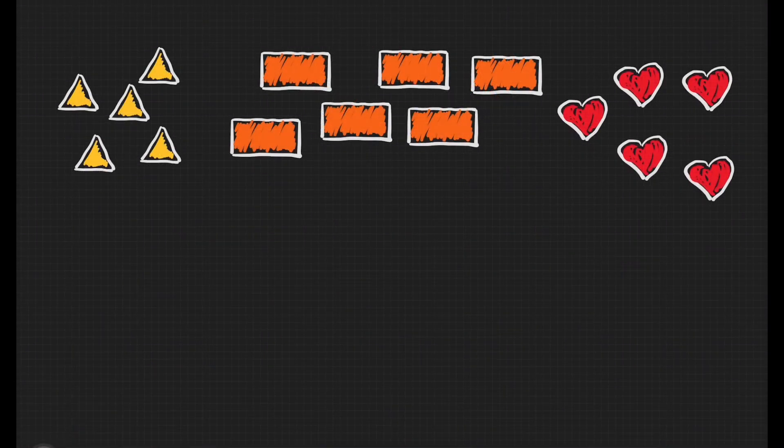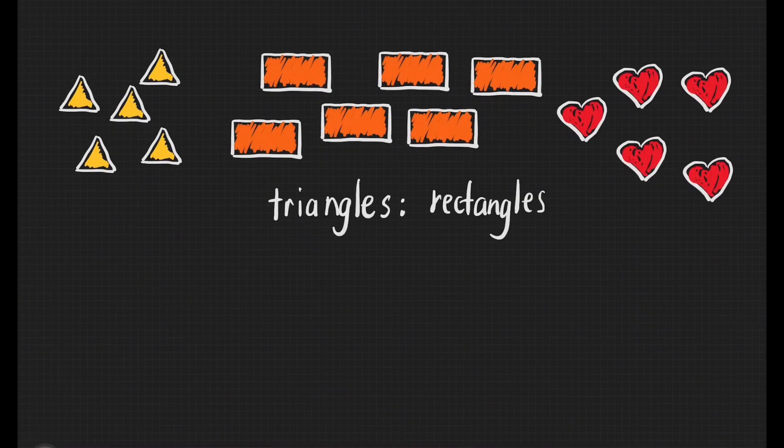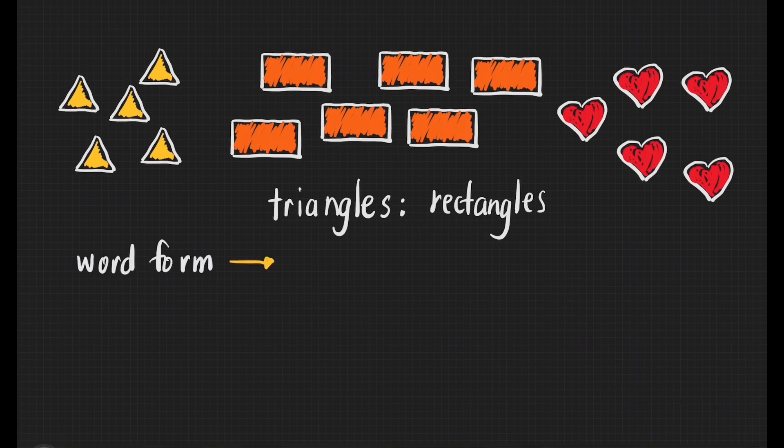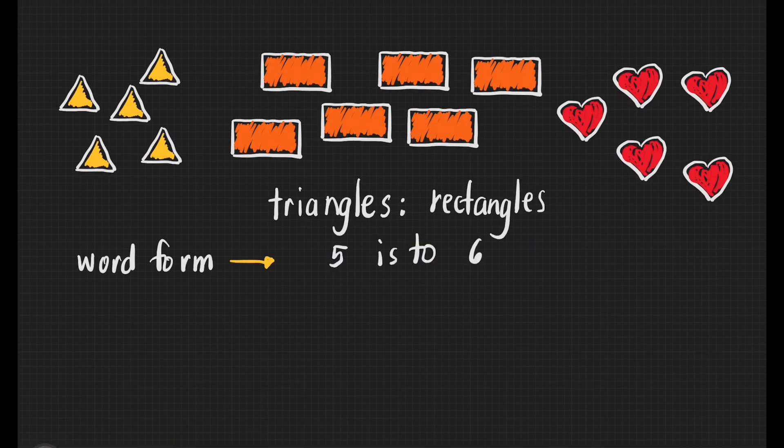Let us have some exercises. Give the ratio of the number of triangles to the number of rectangles. May I know your answer? You have to give me the word form, the fraction form, and the colon form. For the word form, our answer is 5 is to 6.